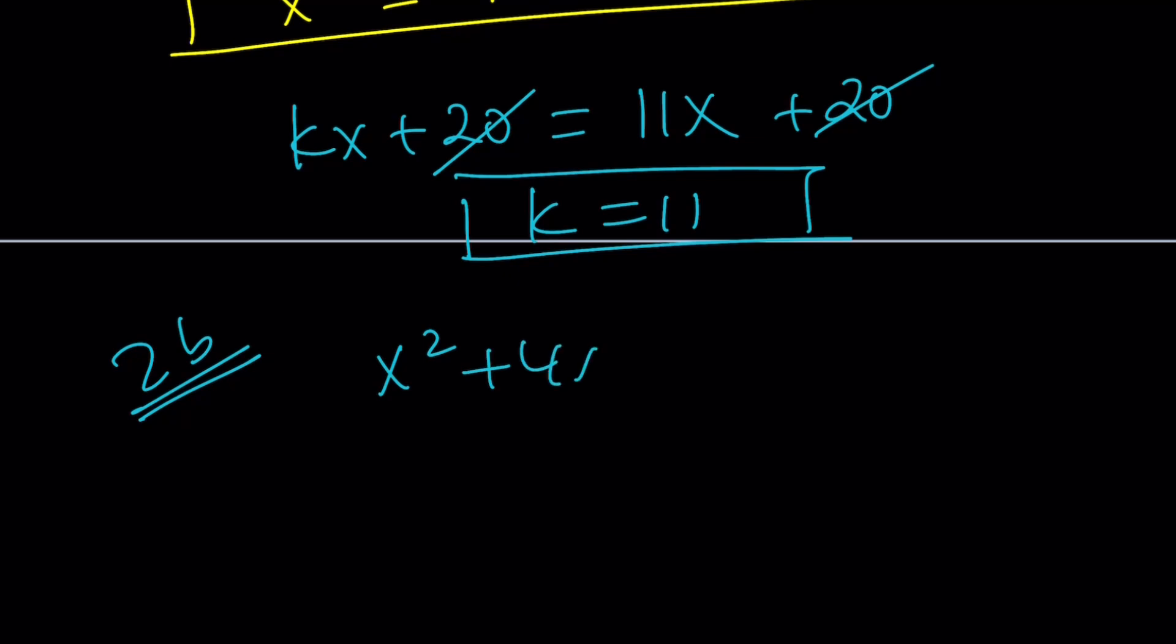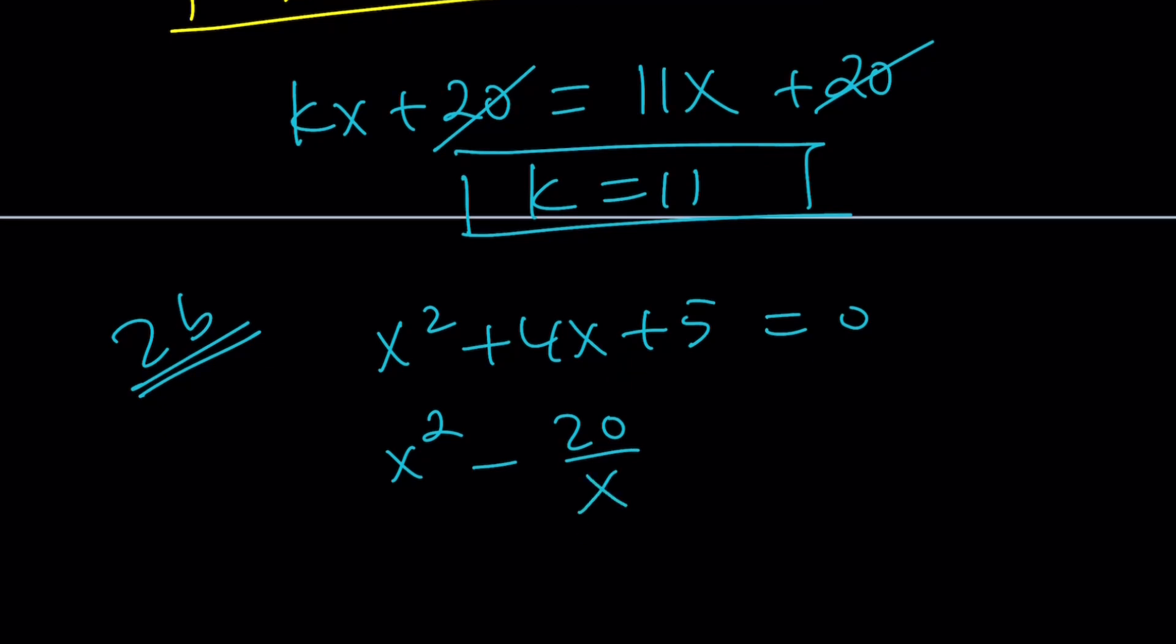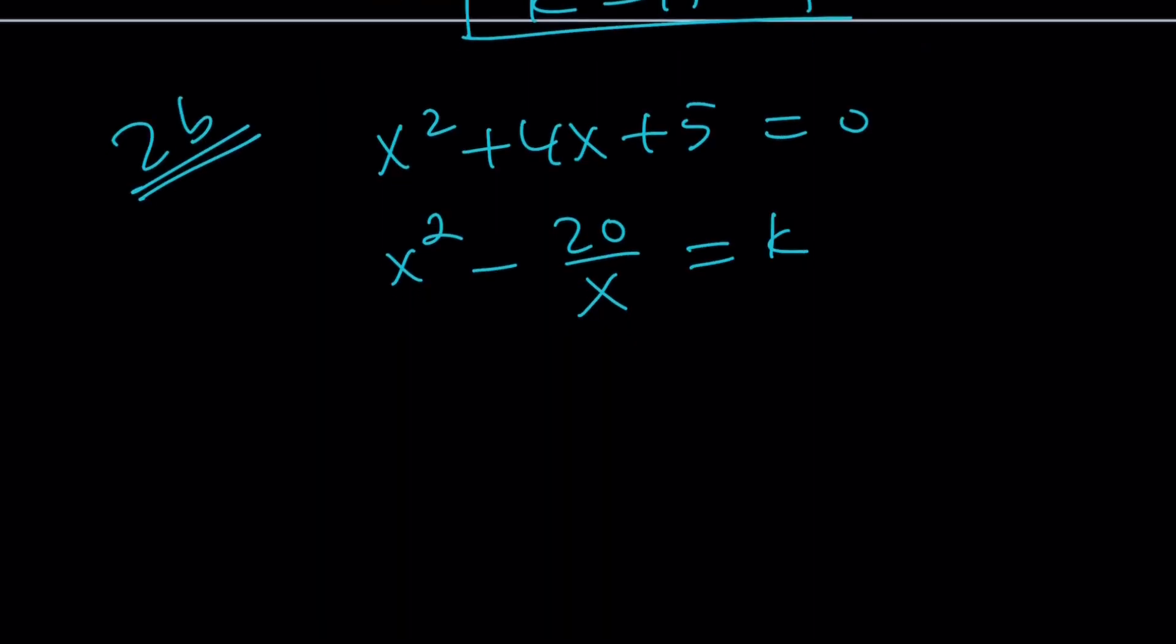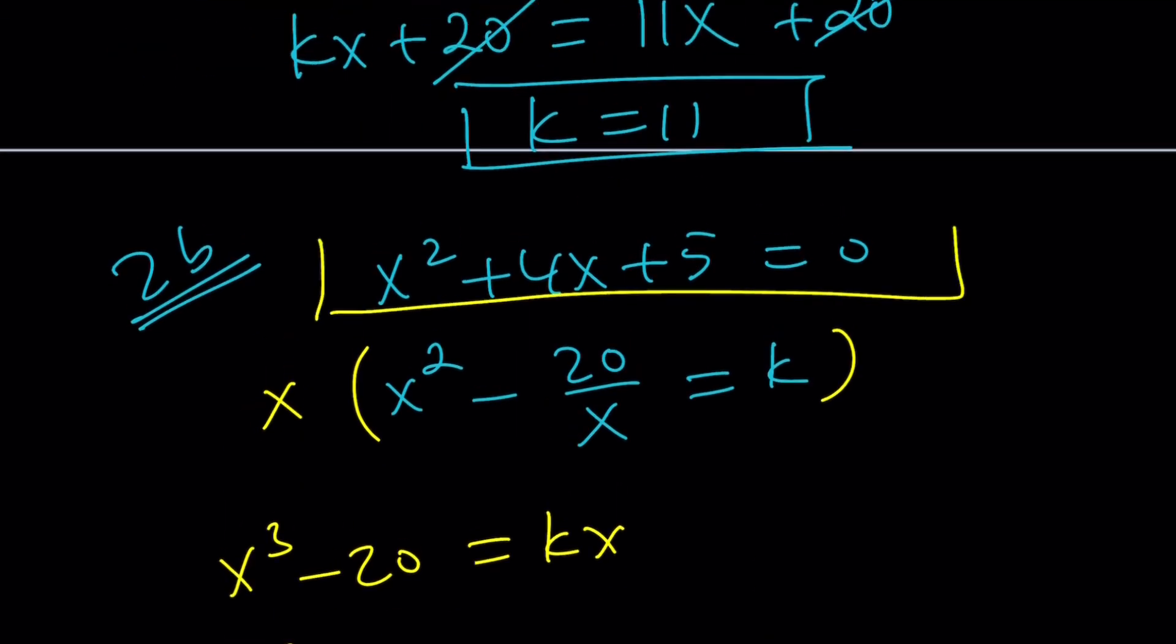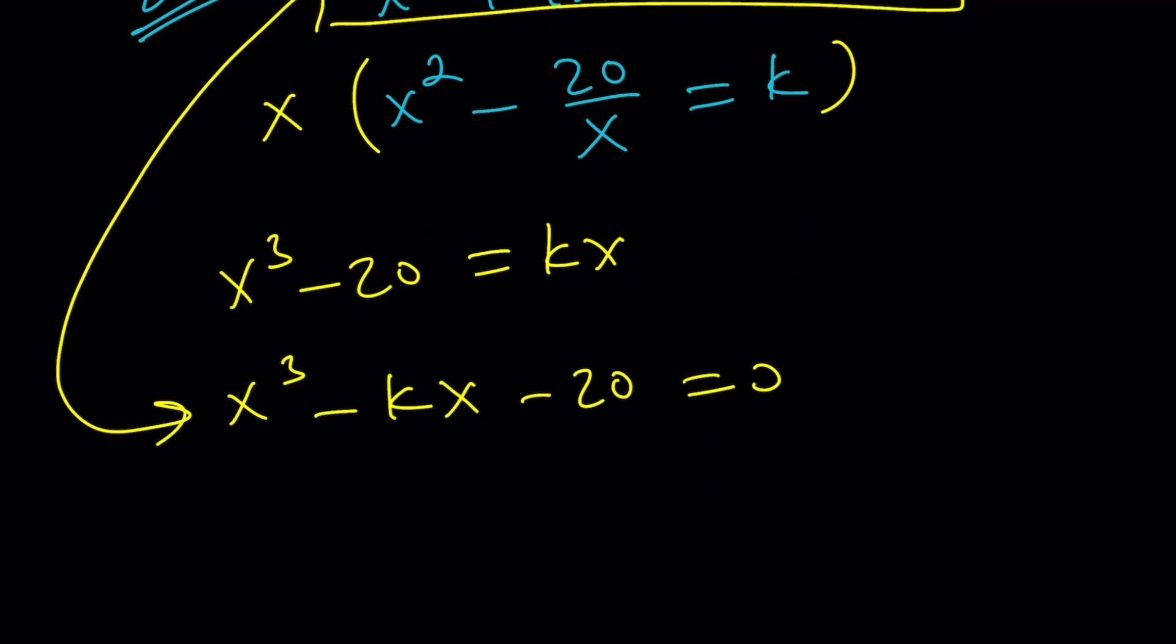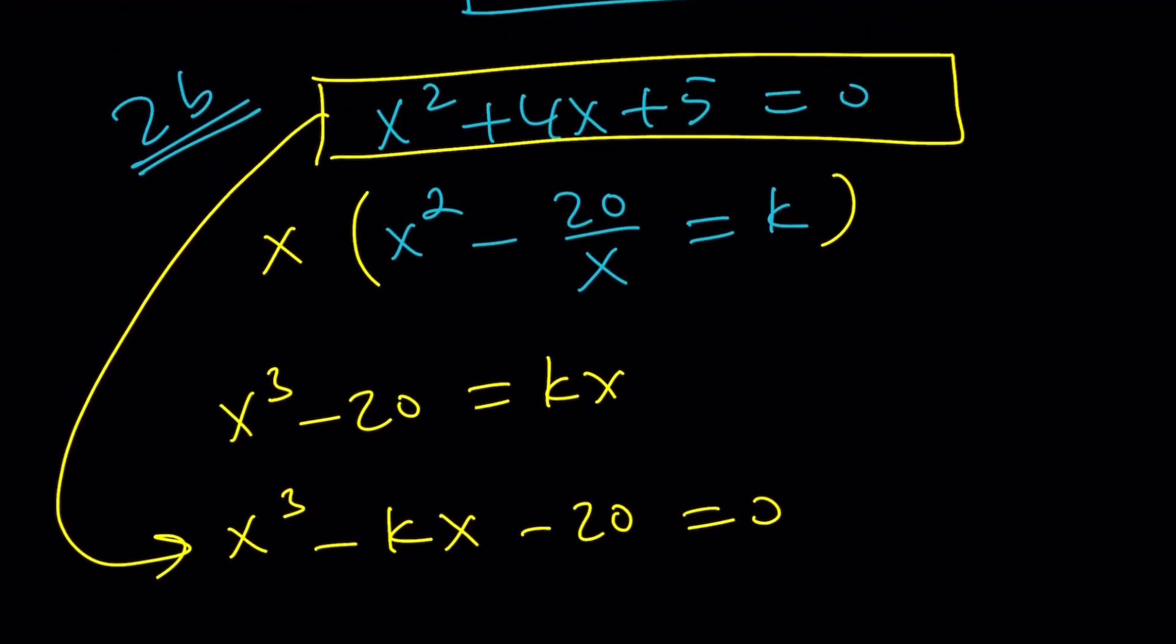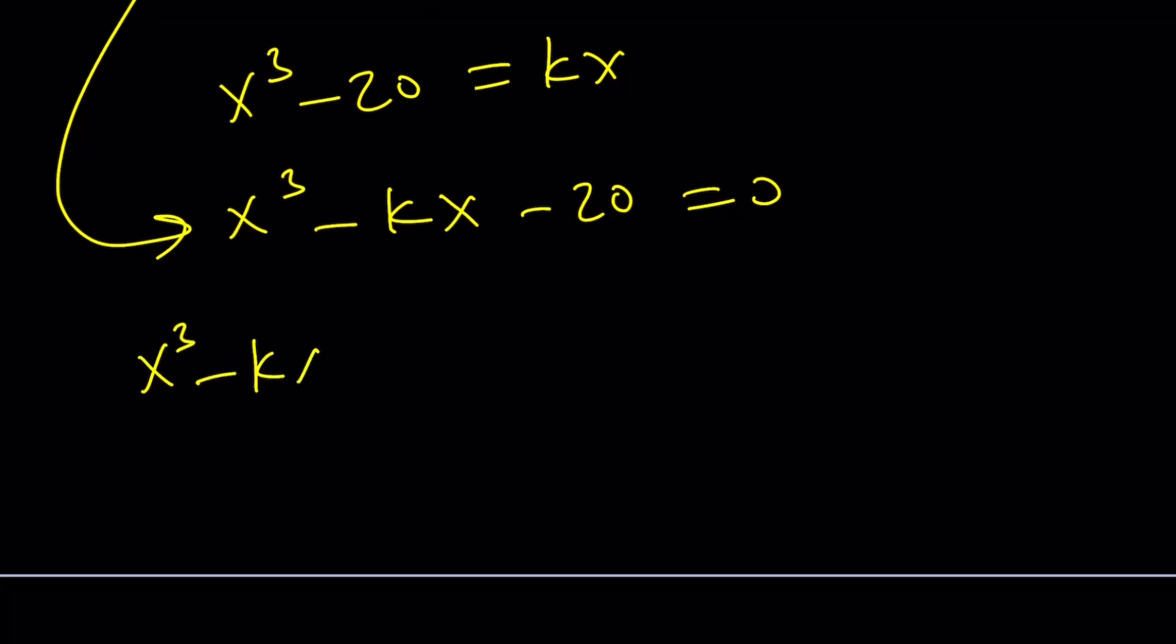We have x squared plus 4x plus 5 equals 0, and we're supposed to evaluate this. I'm going to use a slightly different approach. I'm setting this equal to k and multiplying both sides by x, getting x cubed minus 20 equals kx. But instead of isolating x cubed, I'm going to put everything on the same side. The quadratic divides the cubic because all the roots of the quadratic are included in the cubic equation.